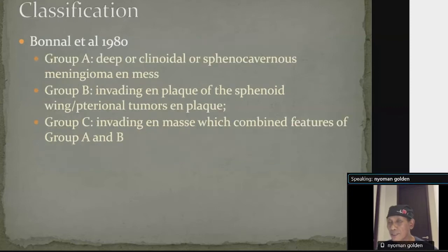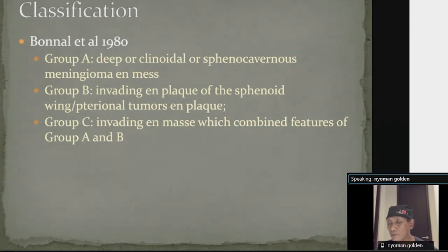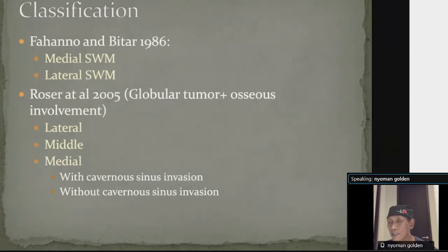Since then, there are many classifications available in the literature. Such as Bonal et al. in 1980, who divided this group of tumors into three groups, including both plaque and globoid tumors. Pahano and Peteros in 1986 simply classified this tumor into two groups: medial and lateral sphenoid wing meningioma.